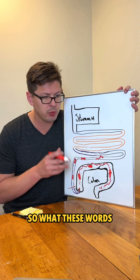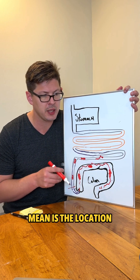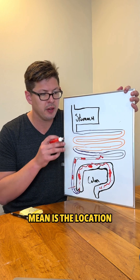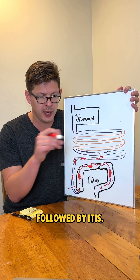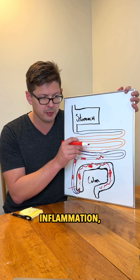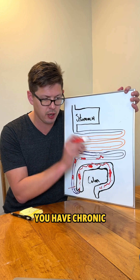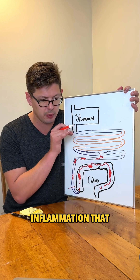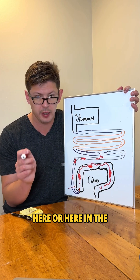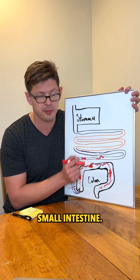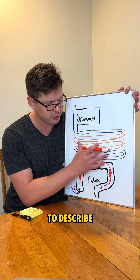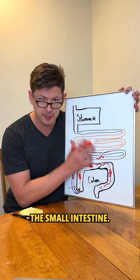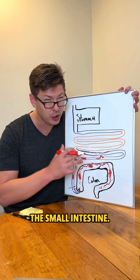What these words are supposed to mean is the location followed by 'itis.' You have chronic inflammation that won't go away either in the colon or in the small intestine. Crohn's is used to describe inflammation in the small intestine.